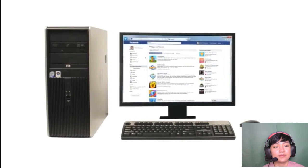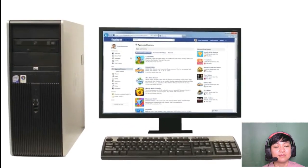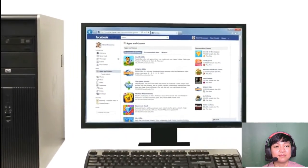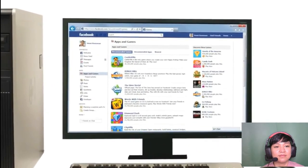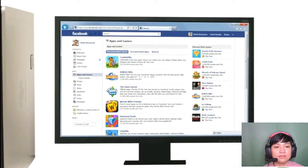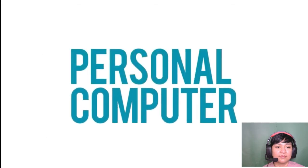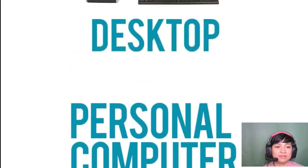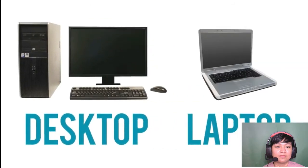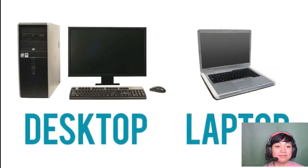Software is any set of instructions that tells the hardware what to do, such as a web browser, media player, or word processor. When most people say computer, they're talking about a personal computer. This can be a desktop computer or a laptop computer, which has basically the same capabilities, but in a more portable package.